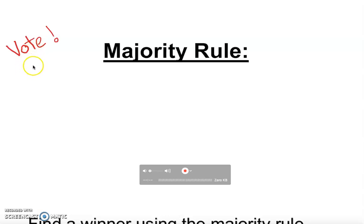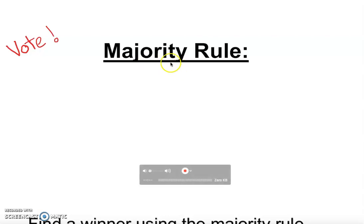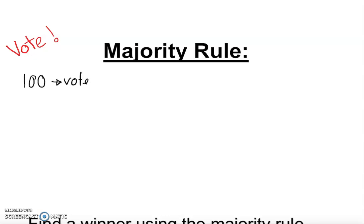One of the rules is called majority rule. Majority rule means that if anyone gets more than 50% of the votes, we call that person the winner. Let's play with some numbers. If I have 100 votes, a 50-50 split is not going to work — that's a tie.